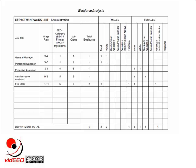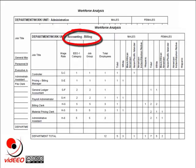The EEO-1 categories are the standard 10 categories: executive and senior level officials and managers, first and mid-level officials and managers, professionals, technicians, sales workers, administrative support workers, craft workers, operatives, laborers and helpers, and service workers. We do this for each of our departments or work units.